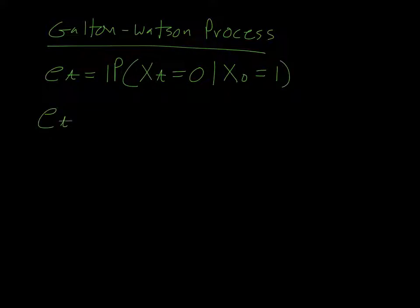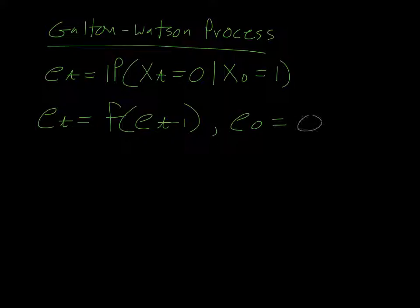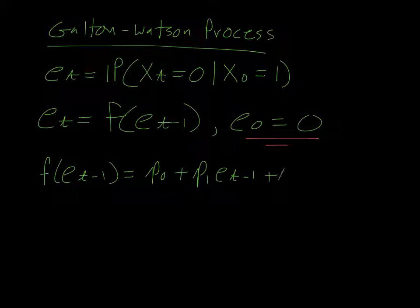It solved this iterative equation, this difference equation, where the initial extinction probability is 0 because somebody exists, the name isn't extinct, and this F is the moment-generating function of the probabilities of having 0, 1, 2, and so forth offspring.